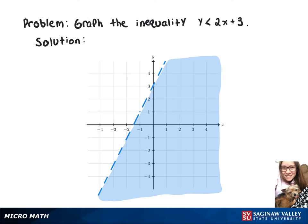So if you wanted to test a point, say 0, 0, and you sub in 0 for x and 0 for y, then you get 0 is less than 3, which is true, and you can see on the graph that the point 0, 0 is in our shaded region.